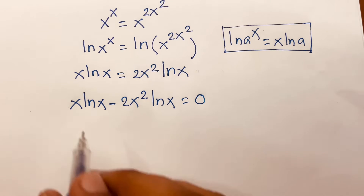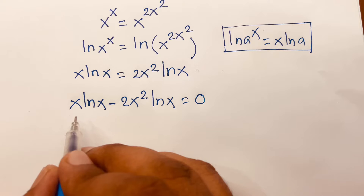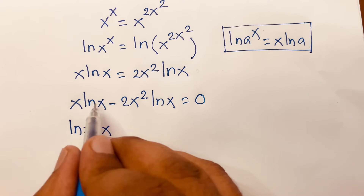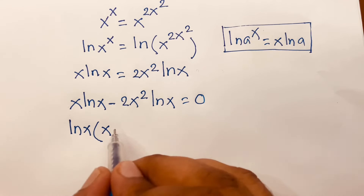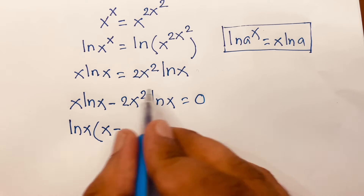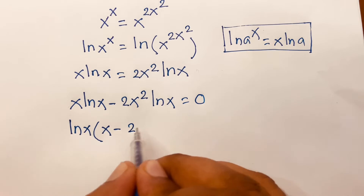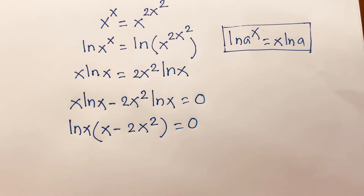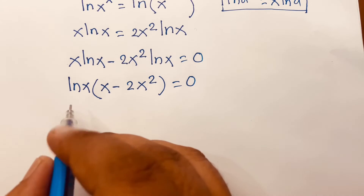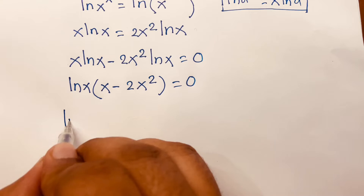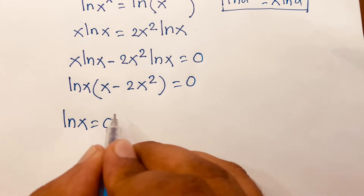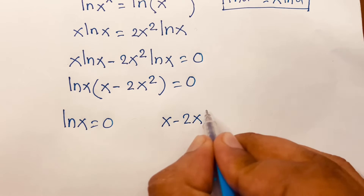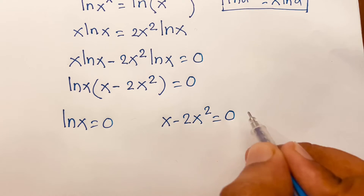I can say ln(x) is common. So it will be ln(x) times (x minus 2x²) is equal to 0. Now we find two terms: the first term is ln(x) = 0, and the other term is x minus 2x² = 0.